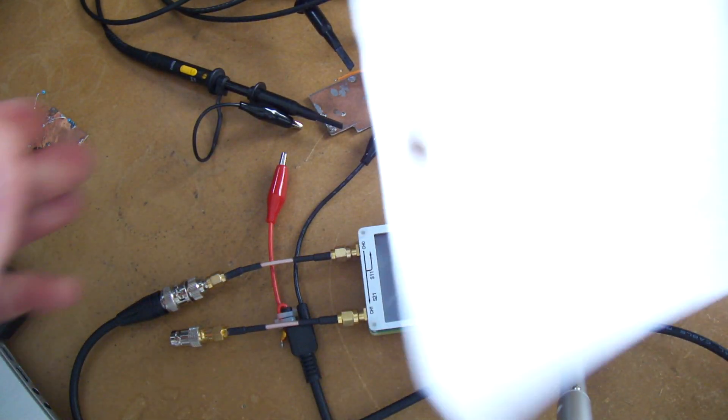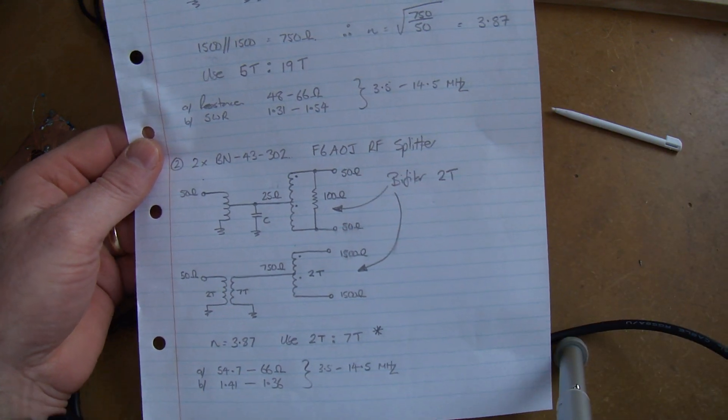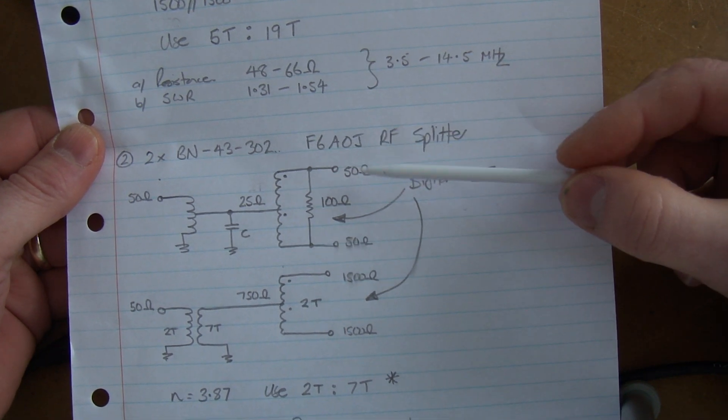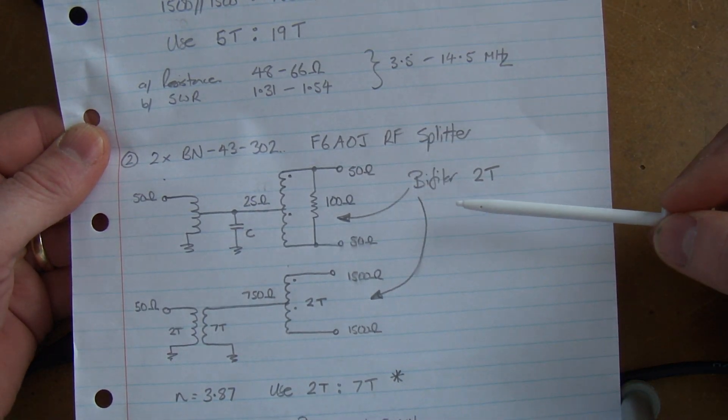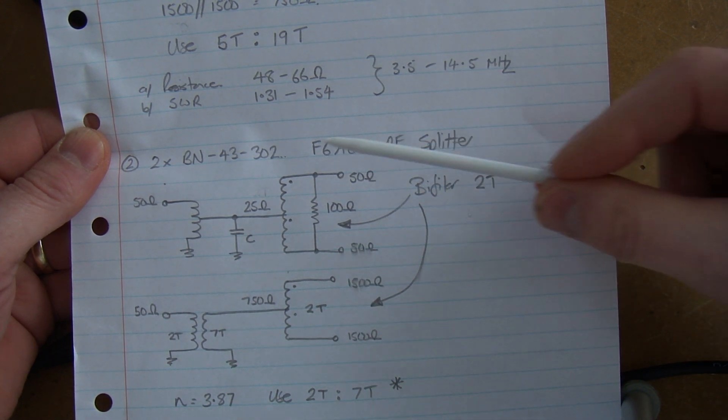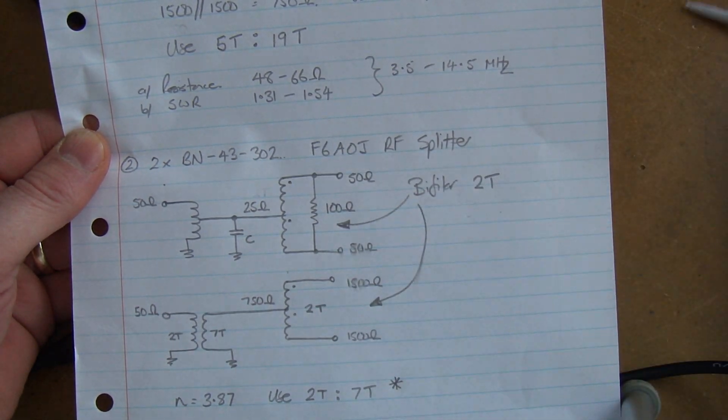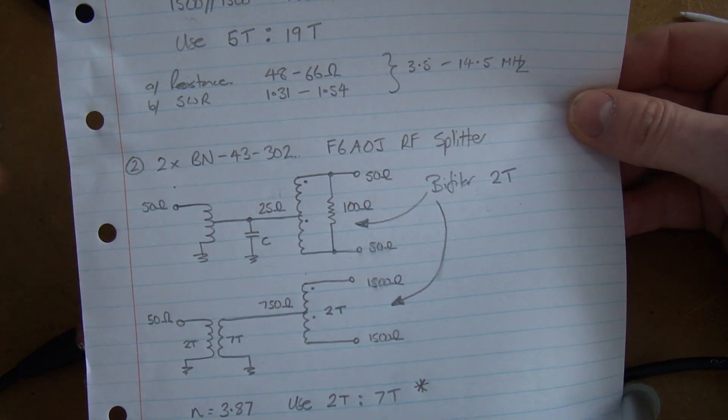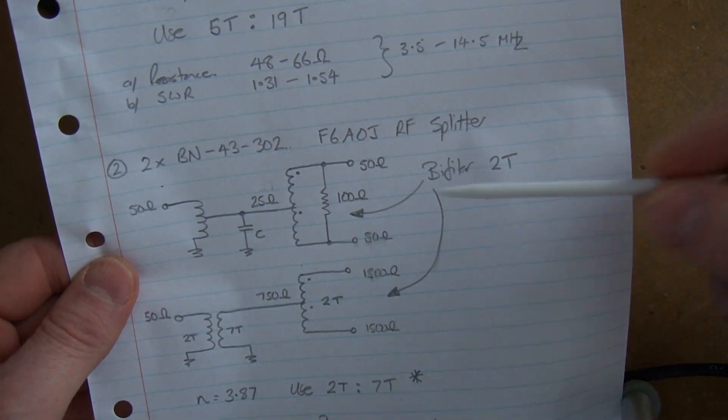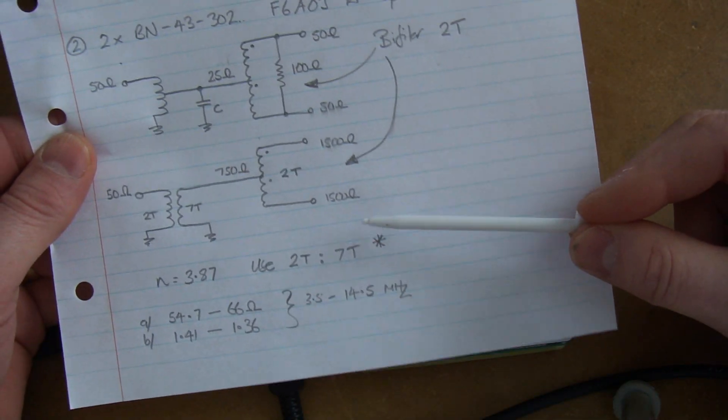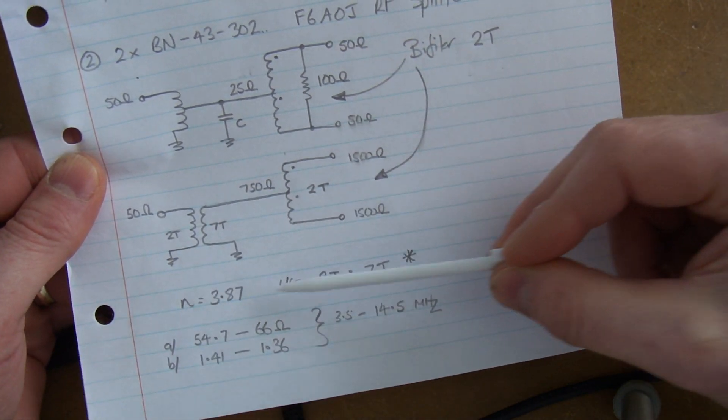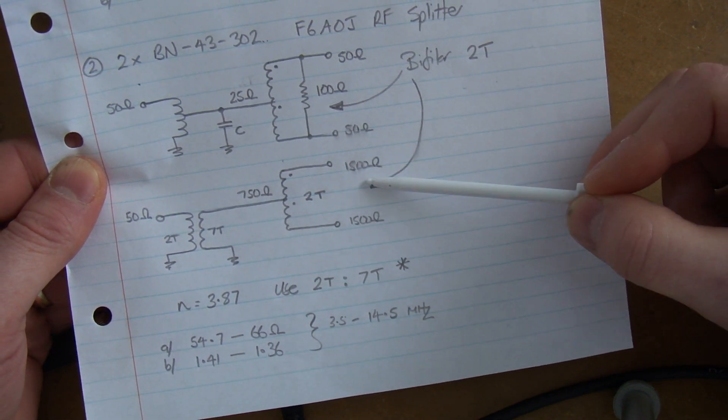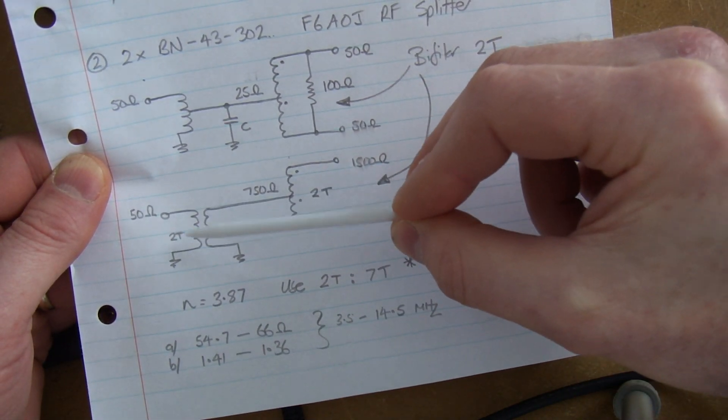The other one I looked at was based on an RF splitter from P6AOJ. I've seen this one floating around a couple of times. I elected to use two BN43-302s, which are the slightly smaller binocular core ones there. This was his original design, and then I had to modify it to take into consideration that rather than having 50 ohms on the output, I had two 1500 ohms.